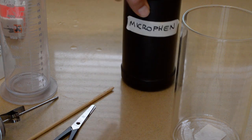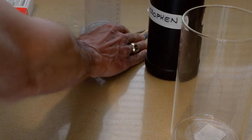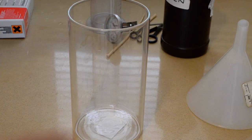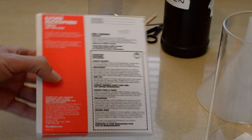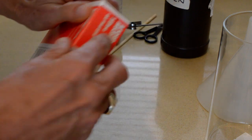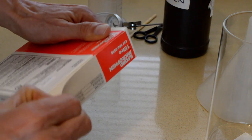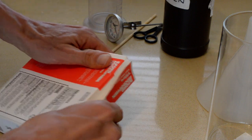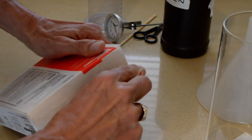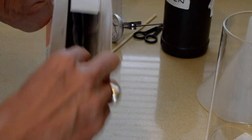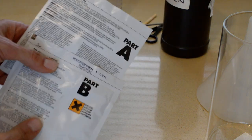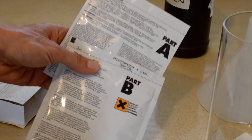So first things first, we're going to open up our box of Powder Developer. And the great thing about Ilford Powder Developer is the instructions are on the box. It's going to contain two envelopes, which are conveniently labeled Part A and Part B.